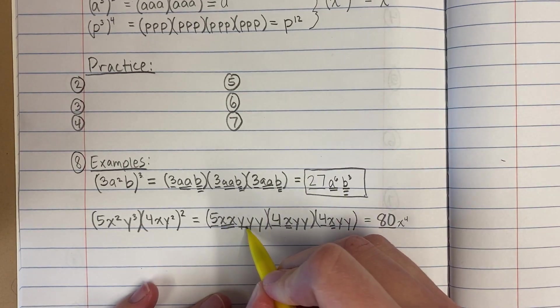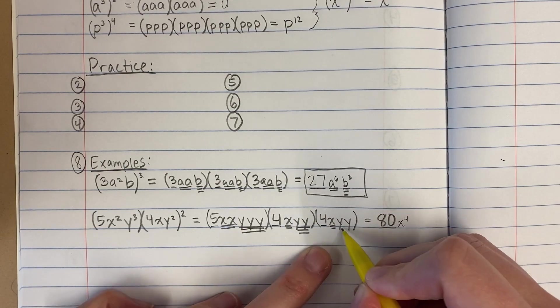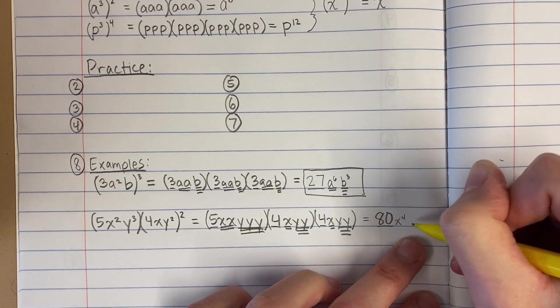Now I'm going to count the y's. 1, 2, 3, 4, 5, 6, 7, 8. 8 y's.